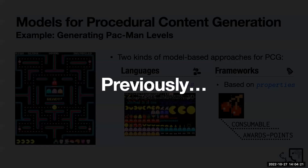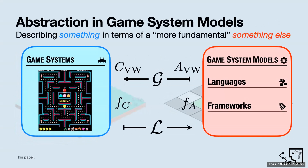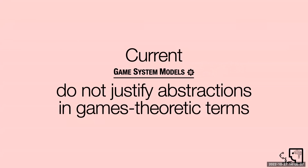In this talk I mentioned two kinds of model-based approaches. The insight the paper is providing is that in the same way we have this concrete-abstract notion, it applies to game system models, where the game systems we have are the things we carry to reason in our languages and frameworks, and the abstract version lives in a lower-dimensional space. The key is that all these variables that are part of this process are usually left implicit when we write papers about these systems. That's what I mean by saying that current game system models do not justify the abstractions in games-theoretic terms.